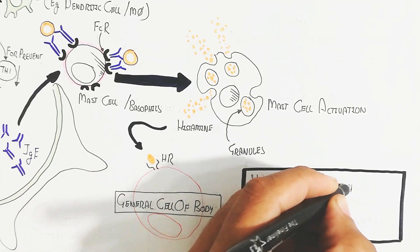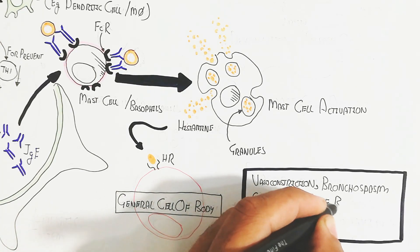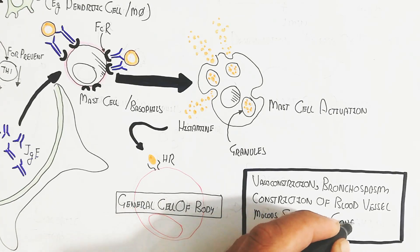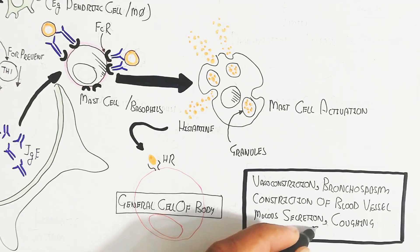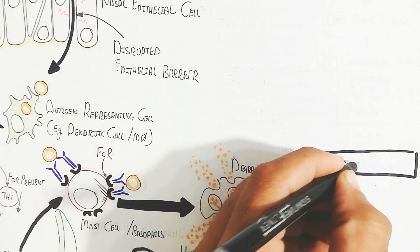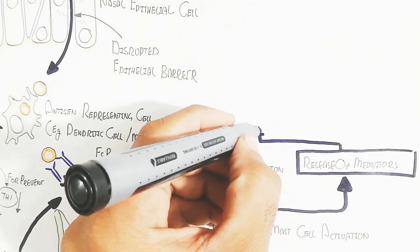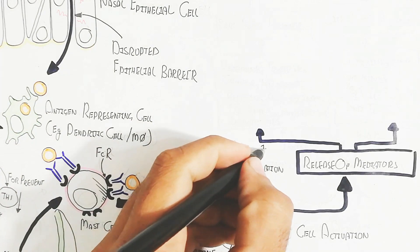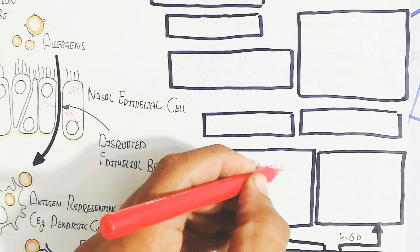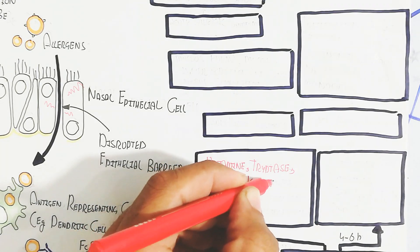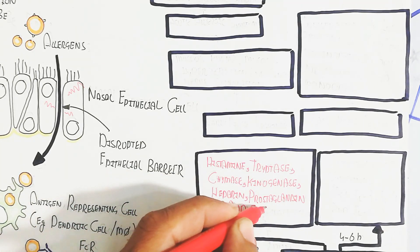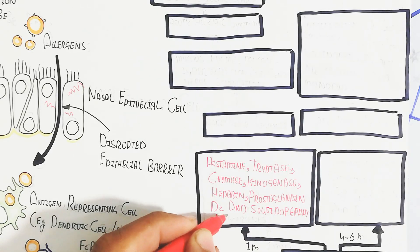Upon degranulation, a large variety of chemical mediators are released — not just histamine. Histamine causes vasoconstriction, bronchoconstriction, constriction of blood vessels, mucus secretion, coughing, sneezing, and flu-like symptoms. Within the first minute, mediators released include: histamine, tryptase, chymase, chymogenase, heparin, prostaglandin D2, and sulfidopeptidyl-leukotrienes.